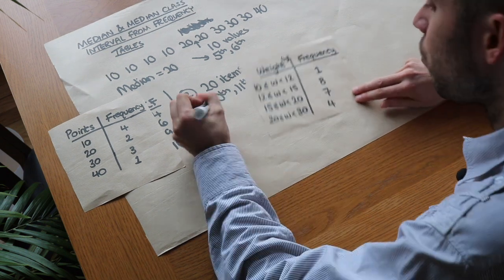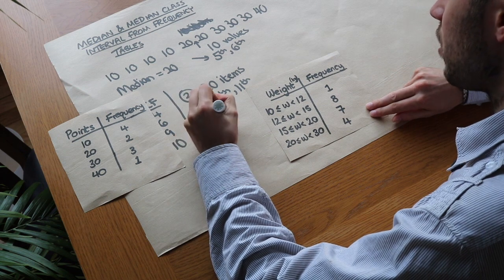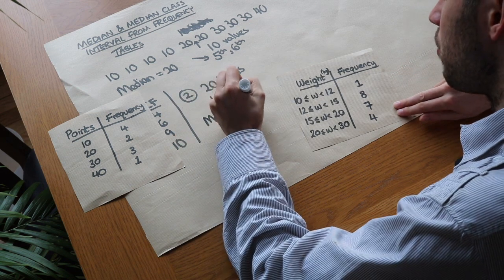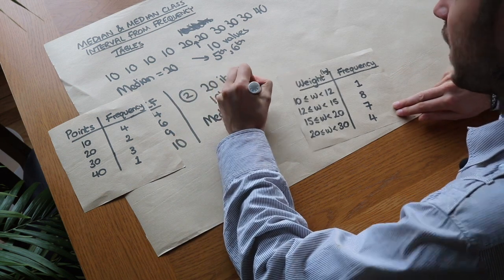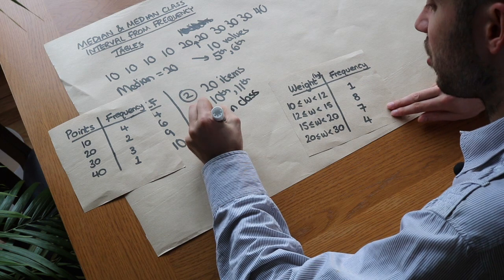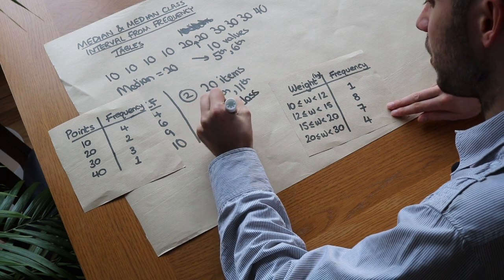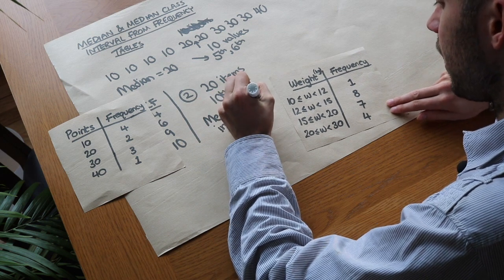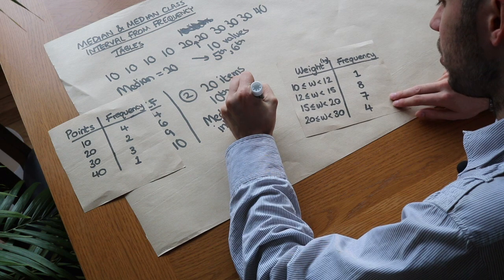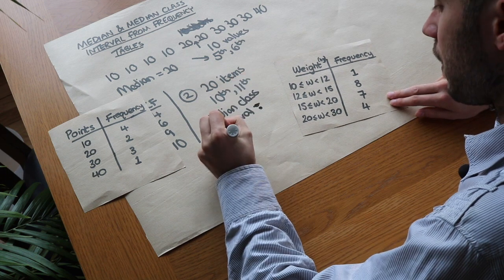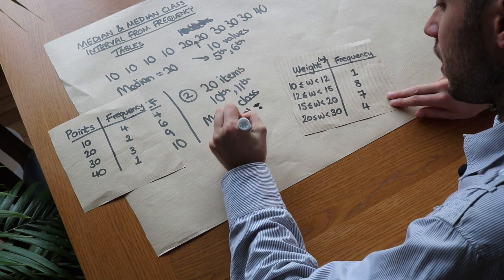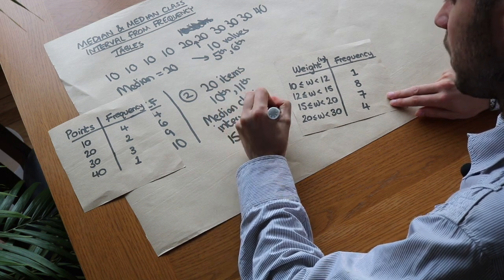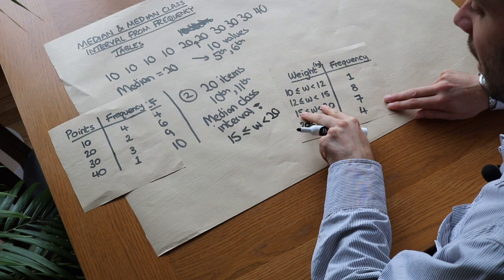We do know that the tenth and eleventh values occur somewhere within that interval, and we call that the median class interval. So we don't know the median itself, but we know the interval in which it lies. The median class interval is 15 ≤ W < 20.